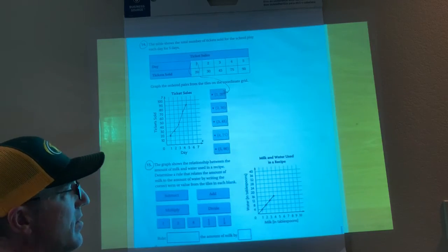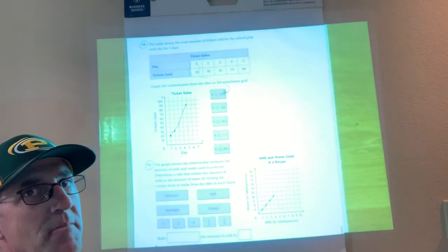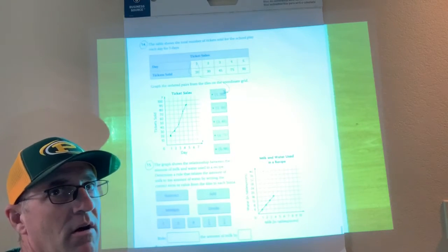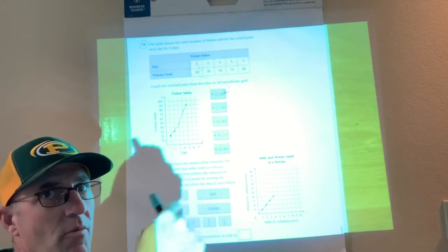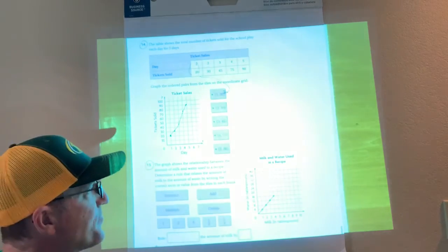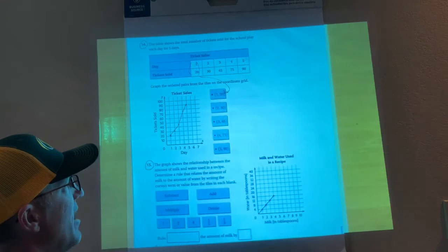Okay, so on the bottom here - this one has been confusing for students in the past, the way they word it and present it. But you just fall back on the things that you know: x on top, y on the bottom, and it looks for a relationship. So that's all I got to do to label it. The graph shows the relationship between the amount of milk and water used in a recipe.